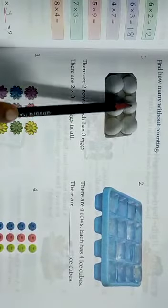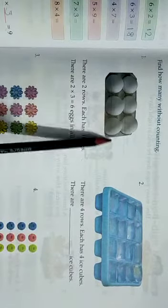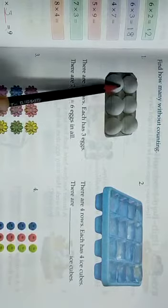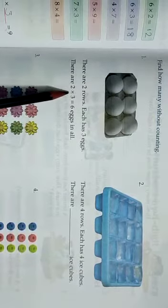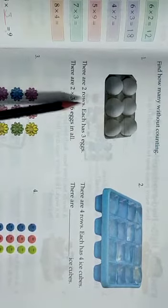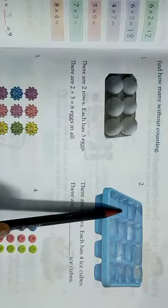Each has three eggs. In each row, how many eggs are there? One, two, three. One, two, three. So there are two rows of eggs. And in each row we have three eggs. Two threes are six eggs in all.